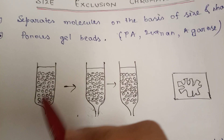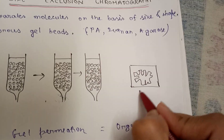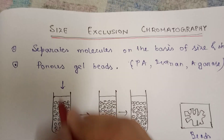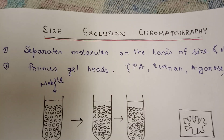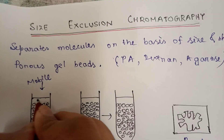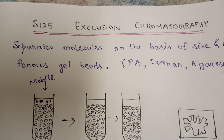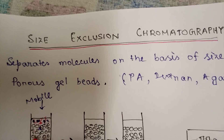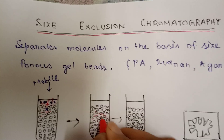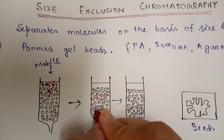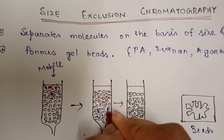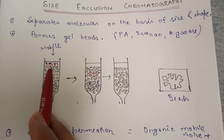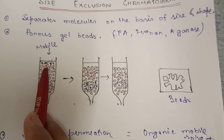Now let's come to the diagram — this is the main part. Here is the column matrix with beads, which have pores as the stationary phase. We apply the sample as the mobile phase. There are two types of molecules in the sample: the red ones are small-sized molecules and the blue ones are the bigger-sized molecules.